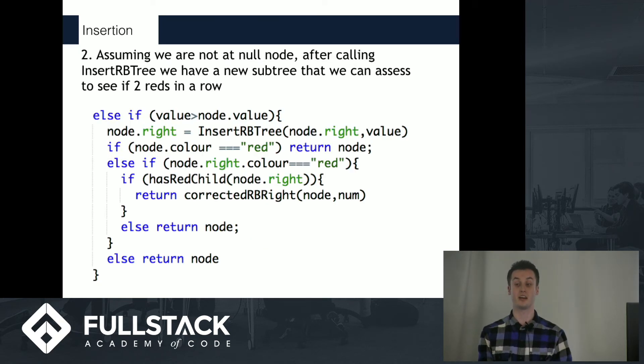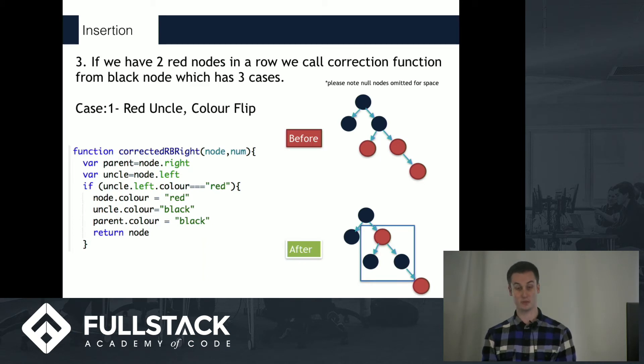What we do is we recurse back up the tree until we see a black node, and that's where we assess whether the tree at that point is valid. This is where it gets slightly more complex - the various imbalance cases.